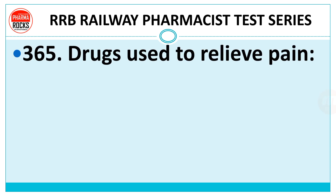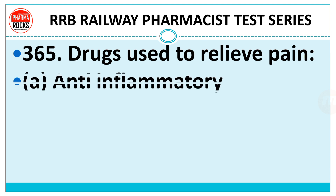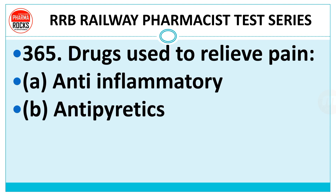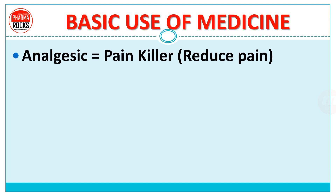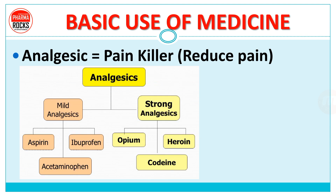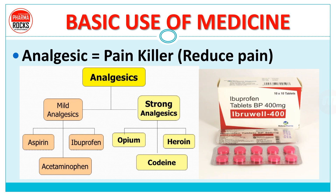Question 365: Drug used to relieve pain. Option A: anti-inflammatory. Option B: antipyretic. Option C: antibiotic. Option D: analgesic. Right answer is analgesic — painkiller that reduces pain. Under mild analgesics: aspirin, ibuprofen, and acetaminophen. Under strong analgesics: opium, heroin, and codeine.